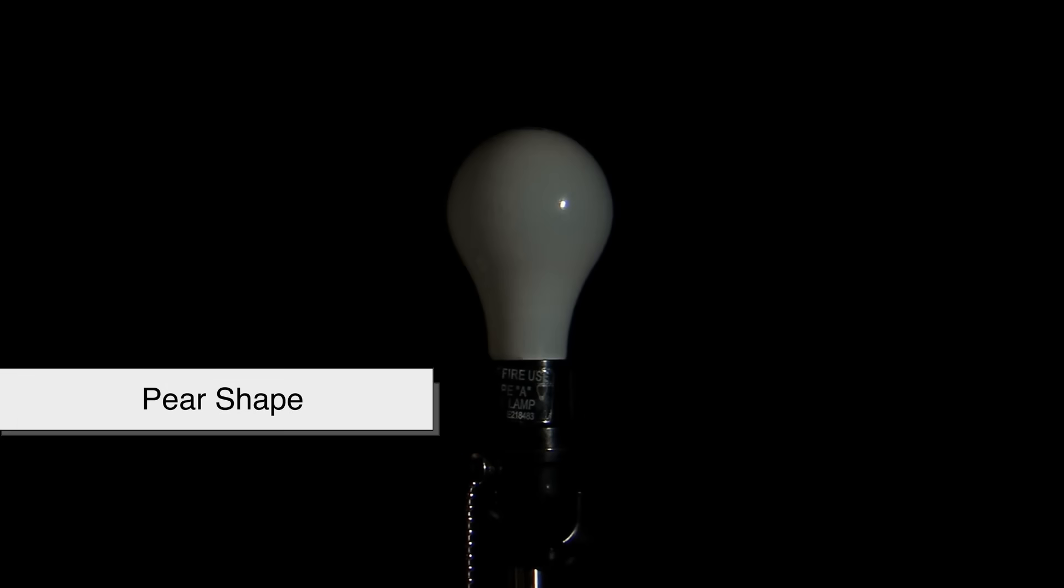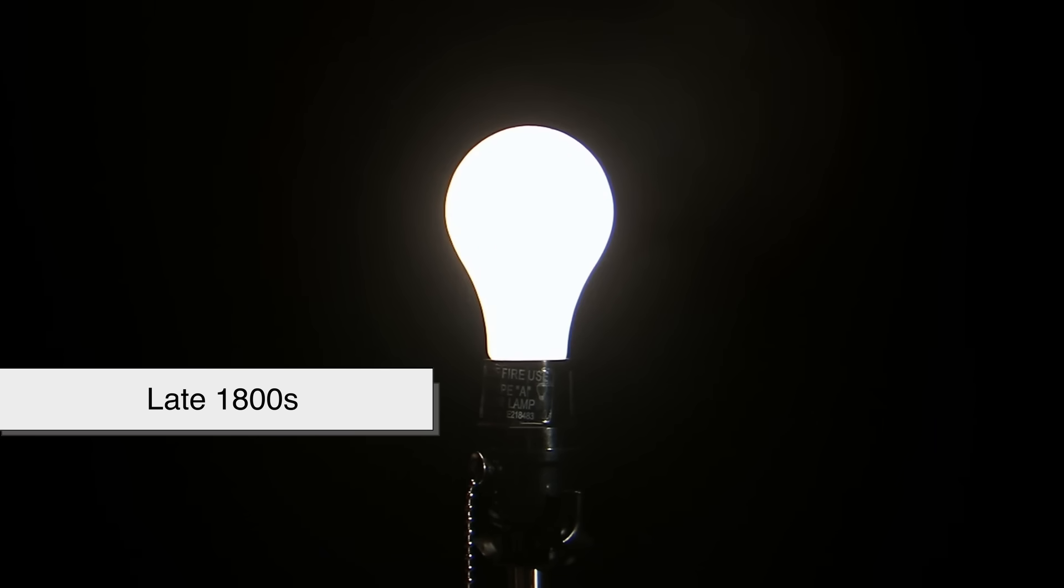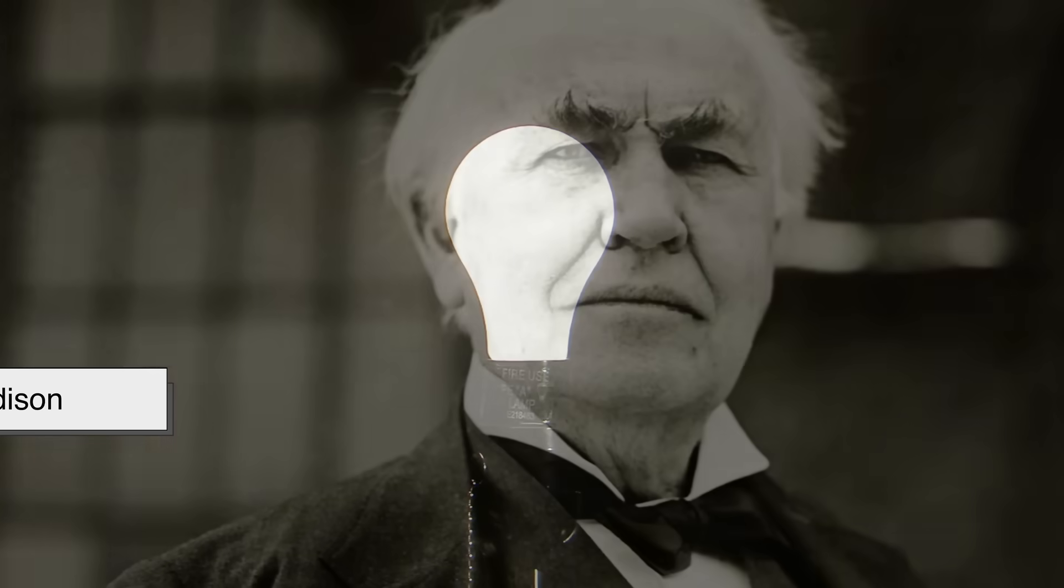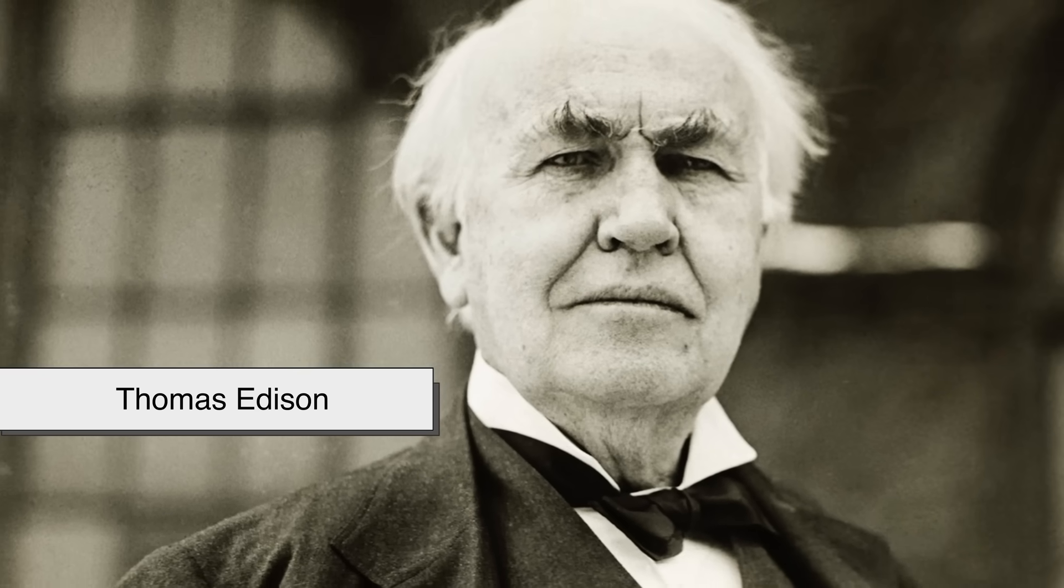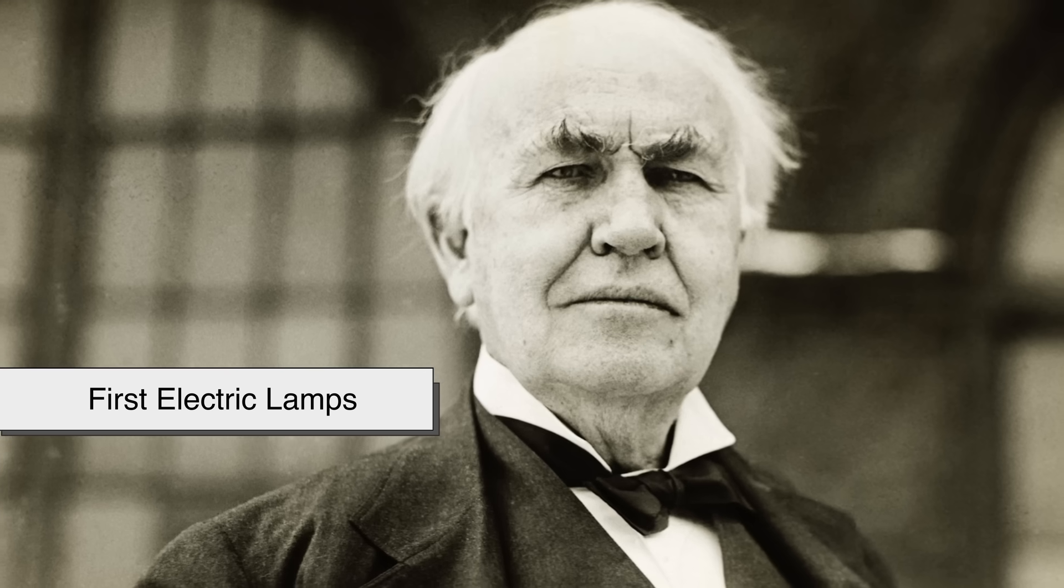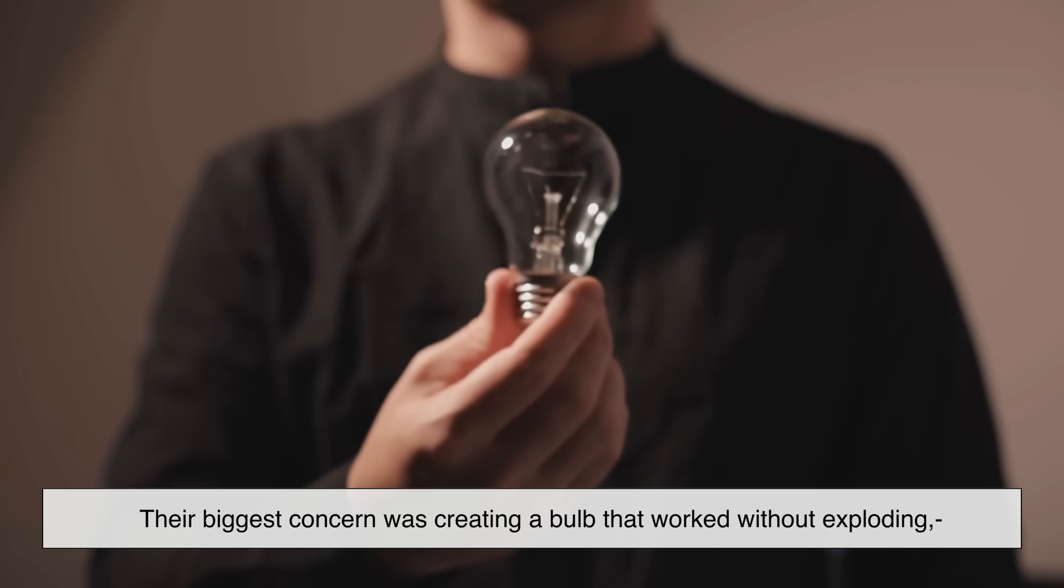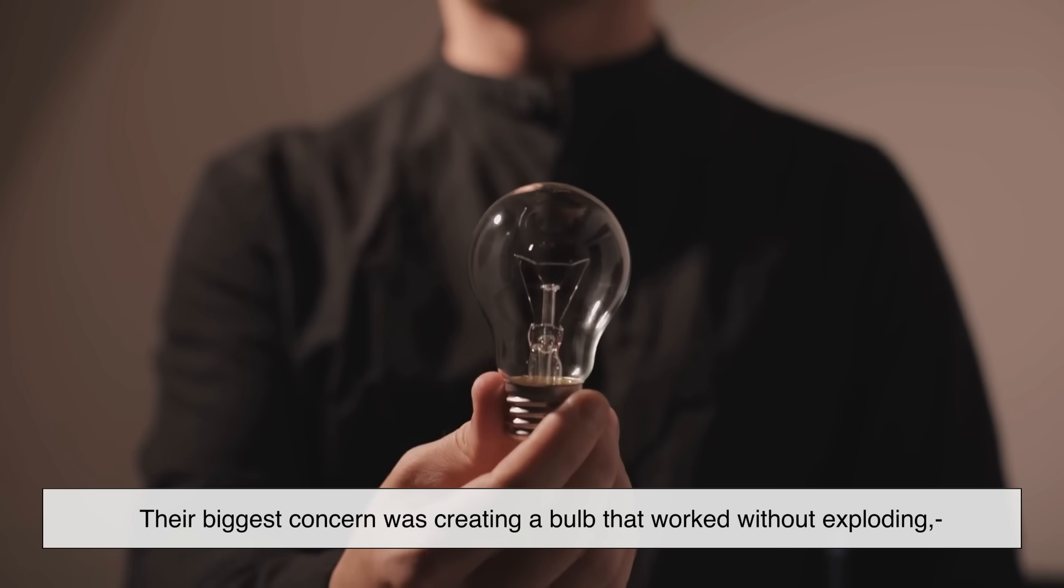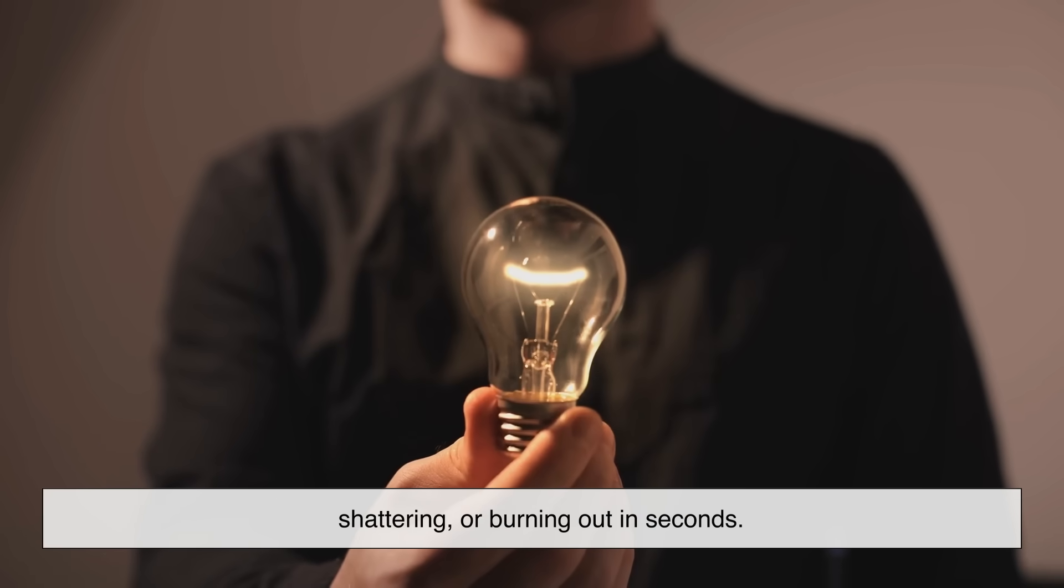To understand the pear shape, we need to go back to the late 1800s when Thomas Edison and other inventors were experimenting with the first electric lamps. They weren't worried about aesthetics. Their biggest concern was creating a bulb that worked without exploding, shattering, or burning out in seconds.